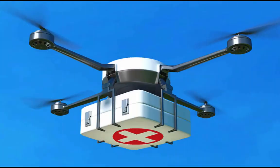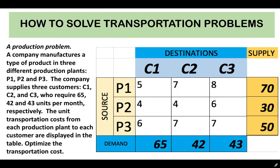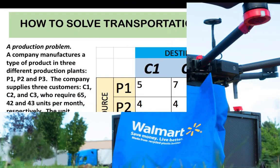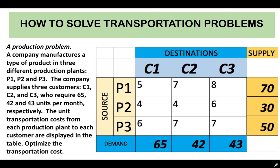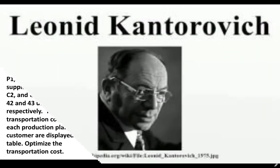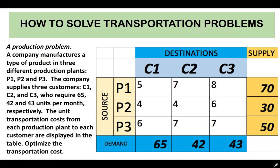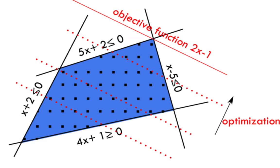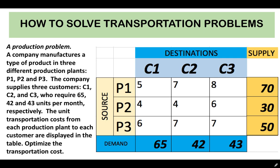In today's lesson, we are going to talk about how to solve transportation problems. But before that, a little background about transportation theory. In mathematics and economics, transportation theory is a name given to the study of optimal transportation and allocation of resources. The problem was formalized by the French mathematician Gaspard Monge in 1781. Major advances were made in the field during World War II by Soviet mathematician and economist Leonid Kantorovich. Consequently, the problem as it is stated now is sometimes known as the Monge-Kantorovich transportation problem. The linear programming formulation is also known as the Hitchcock-Koopmans transportation problem.